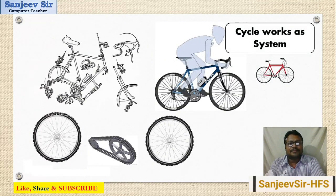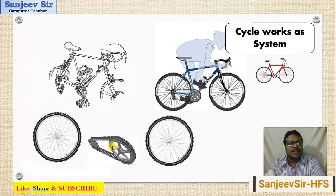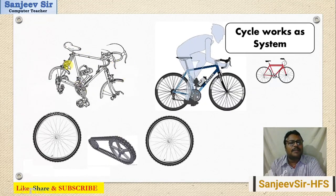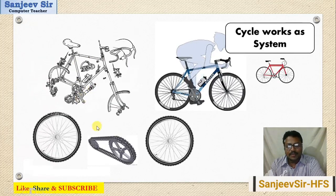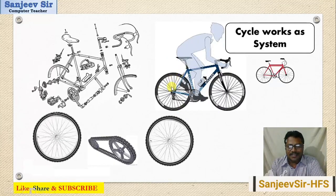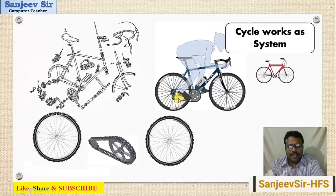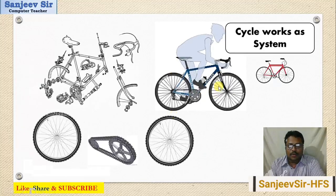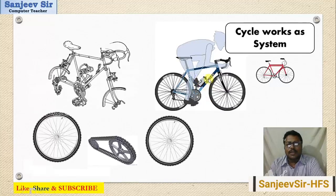A bicycle also illustrates this concept. A bicycle has a wheel, chain, axle, handle, and many different components. When we assemble all these components together, they work as a bicycle. Each component — paddle, chain, axle, wheel, handle — works differently, but when all components are assembled, interconnected, and interdependent, they work together as a bicycle. This is the bicycle work system.